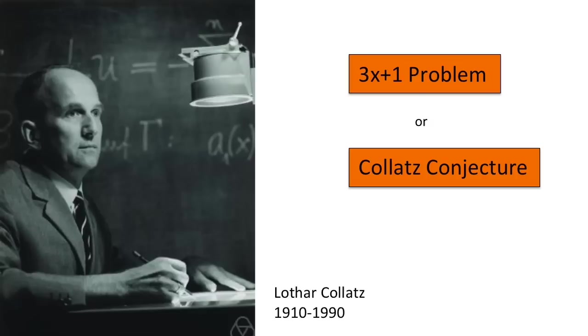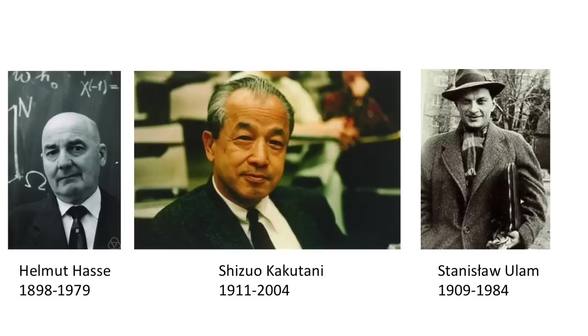Other mathematicians who were intrigued by the problem mentioned it in their lectures, so this conjecture also became known as Haasse's problem, Kakutani's problem, and Ulam's problem.